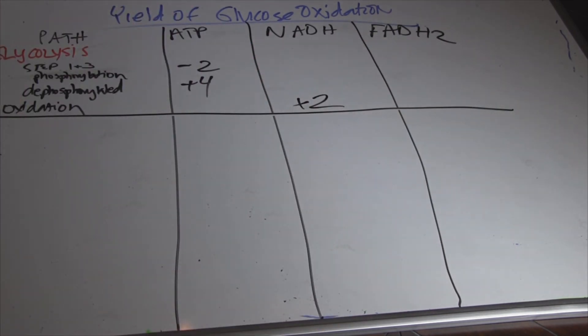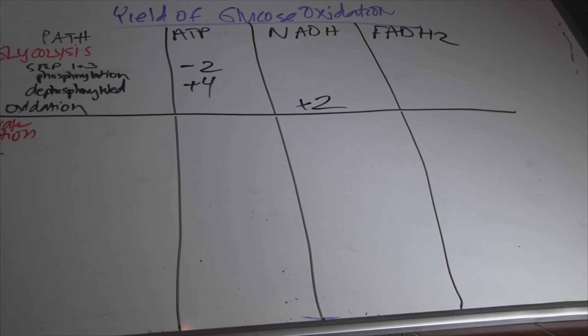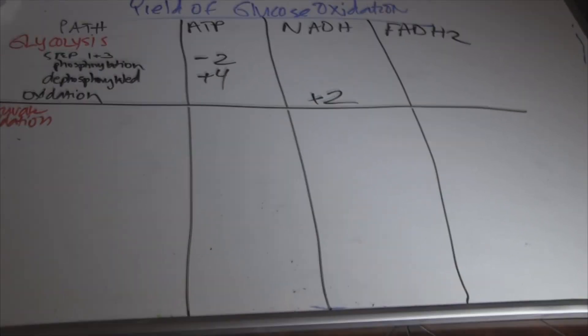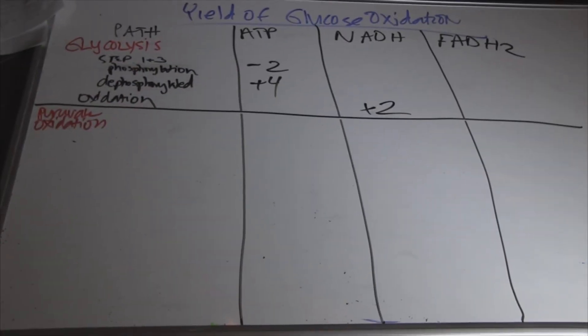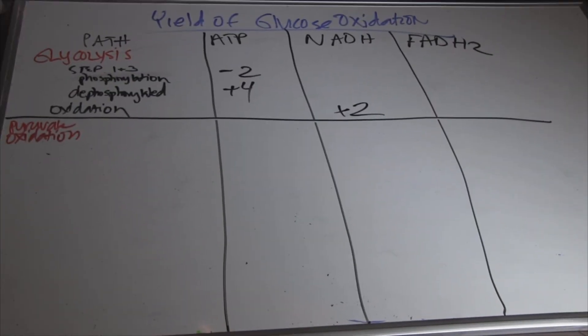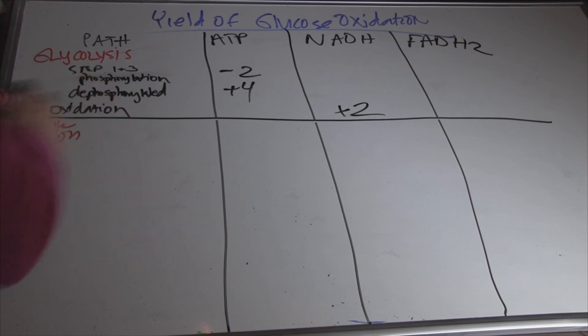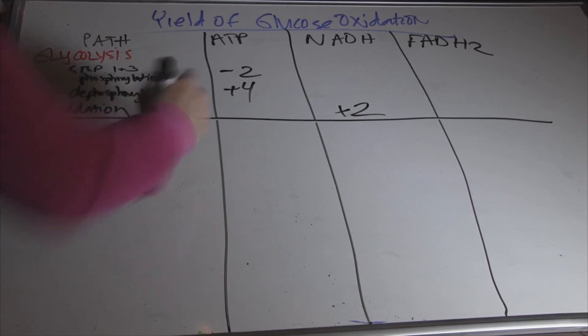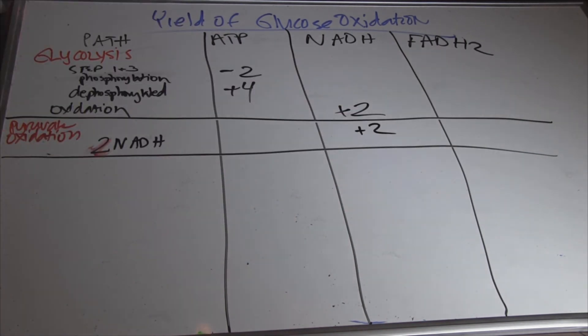Then we have pyruvate oxidation. Pyruvate oxidation. And we gained two reduced NADHs. Then we had the citric acid cycle.